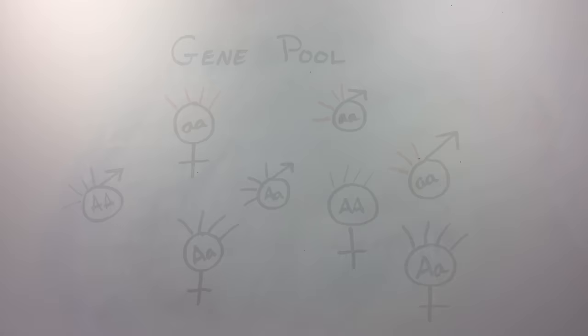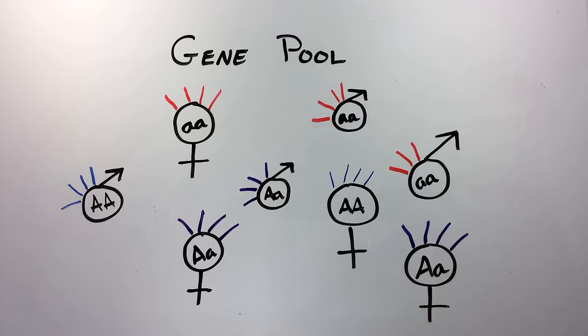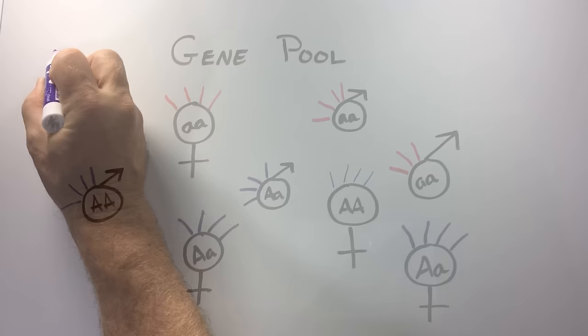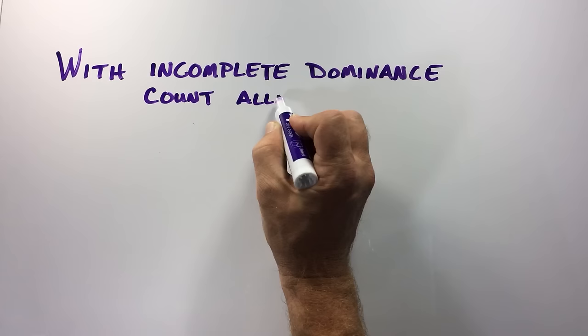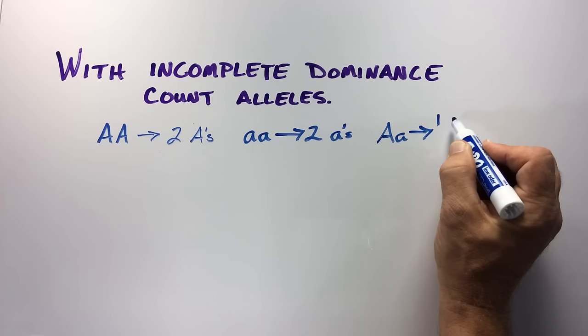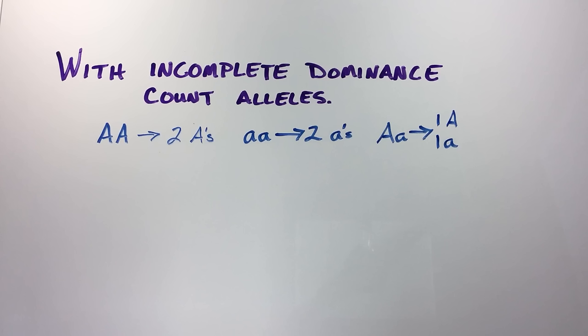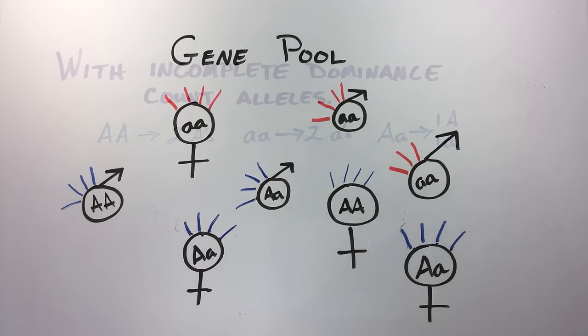Let's now turn our attention to how you would determine the allele frequencies of a population. Because you know the genotype of individuals based on their phenotype, under incomplete dominance all you need to do is count the alleles. Each homozygous individual represents two big A or two little a alleles, and each heterozygous individual represents one big A allele and one little a allele each. By counting up the number of individuals with different phenotypes, you can easily determine the frequency of the different alleles in the population by direct counting.